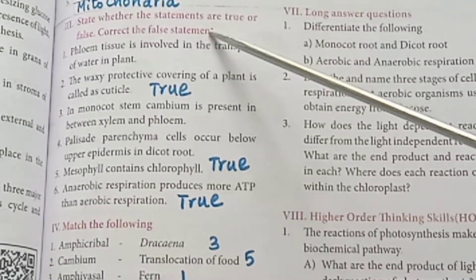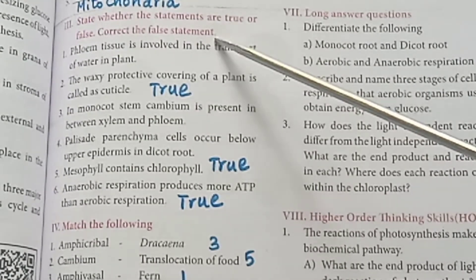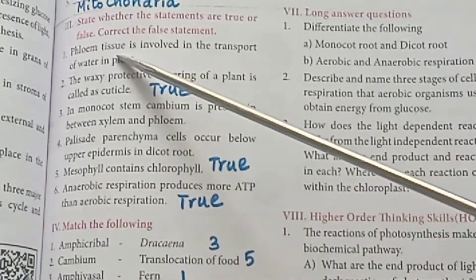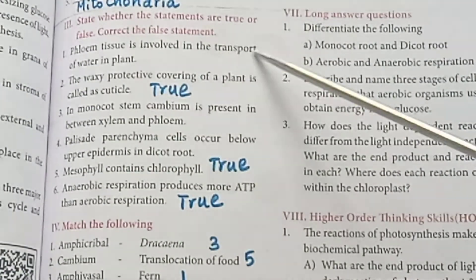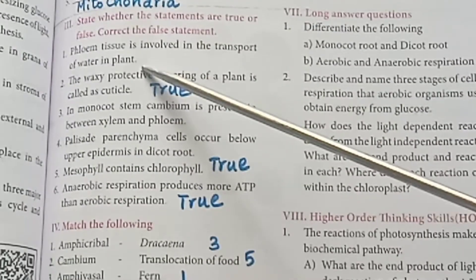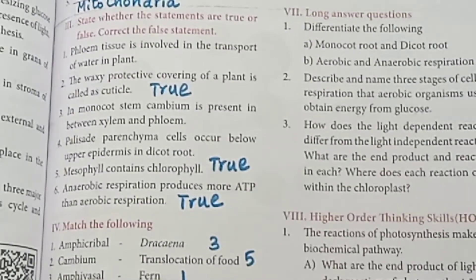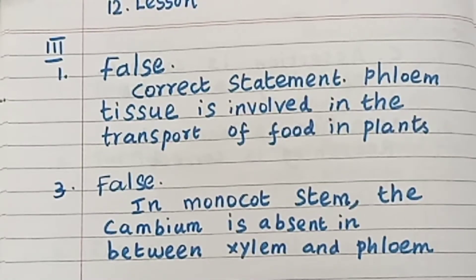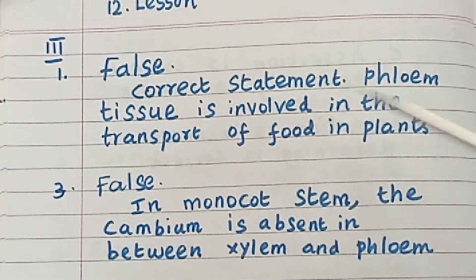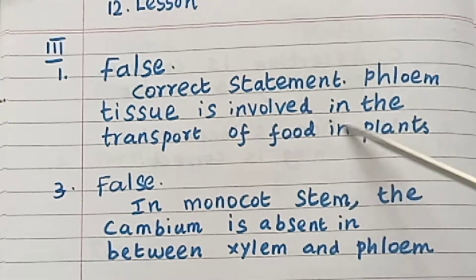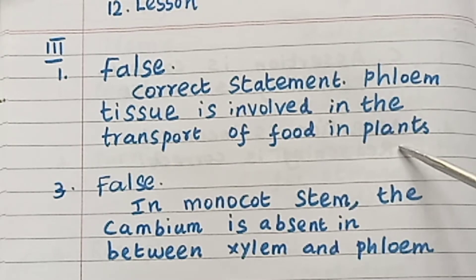State whether the statements are true or false, and correct the false statements. Phloem tissue is involved in the transport of water in plants — False. Correct statement: Phloem tissue is involved in the transport of food in plants.